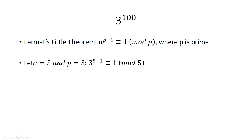If we let a equal 3 and p equal 5, we have 3 to the 5 minus 1, which is congruent to 1 mod 5. So 5 minus 1 can be rewritten as 4, so we have 3 to the 4th is congruent to 1 mod 5.